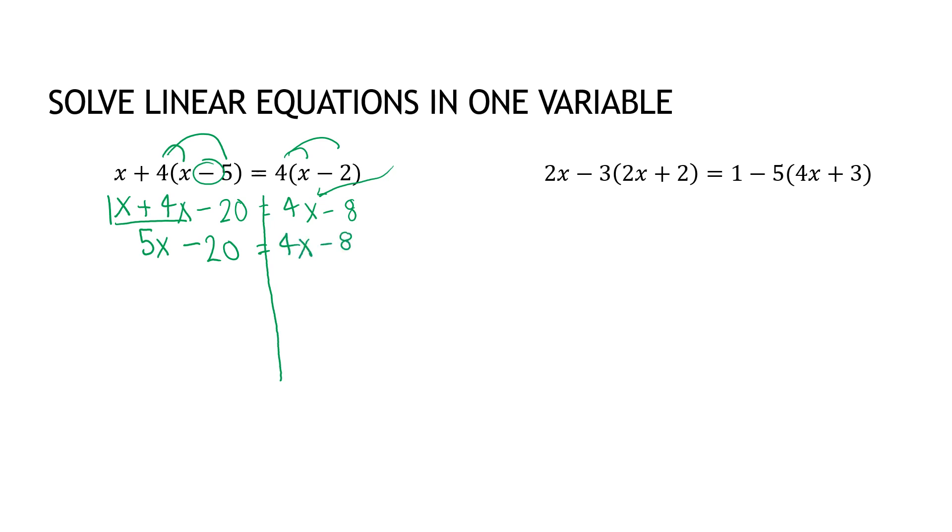My next step is always to get the x's to one side of the equation. Some people start with the constants, I always start with the x's or any variable. I'm going to choose to move this 4x. I don't want the 4x on the right, so I'm going to subtract it. If I subtract it from the right side of the wall, I have to subtract from the left side of the wall. That gives me 1x or just x, bring down my minus 20, bring down my minus 8.